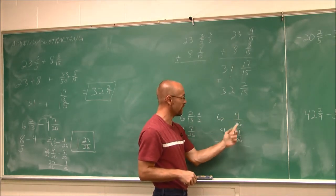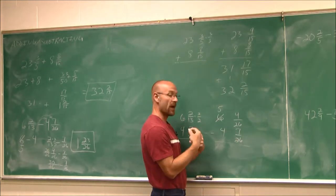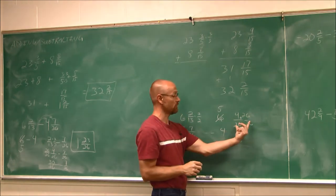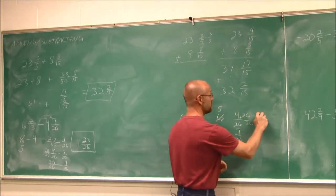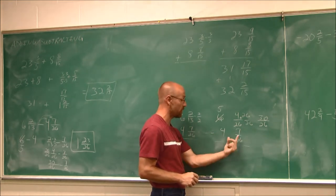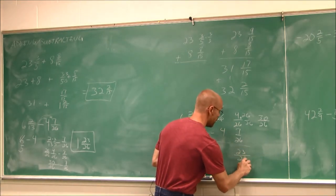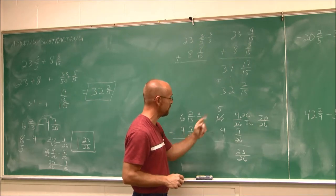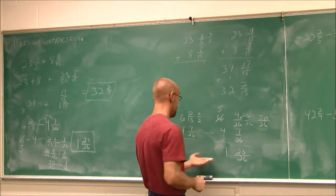I need to make the fraction larger, so I borrow 1 from 6, making it 5, and write that 1 as 26/26 — they're like fractions with the same denominator. So 4 plus 26 is 30. That 30/26 minus 7/26: 30 minus 7 gives me 23/26. Then 5 minus 4 is 1. We get 1 and 23/26 — the same answer as last time.